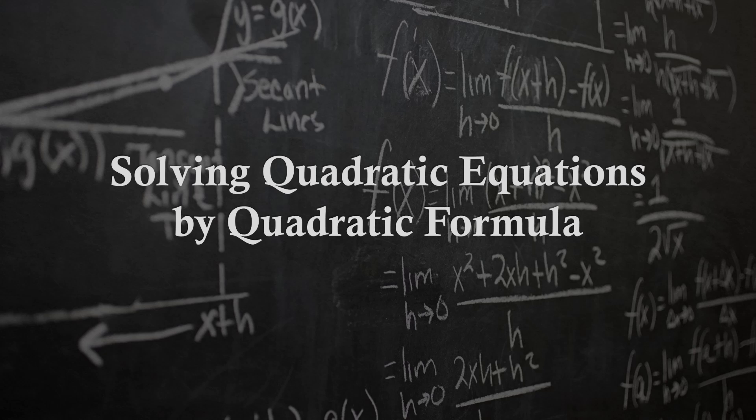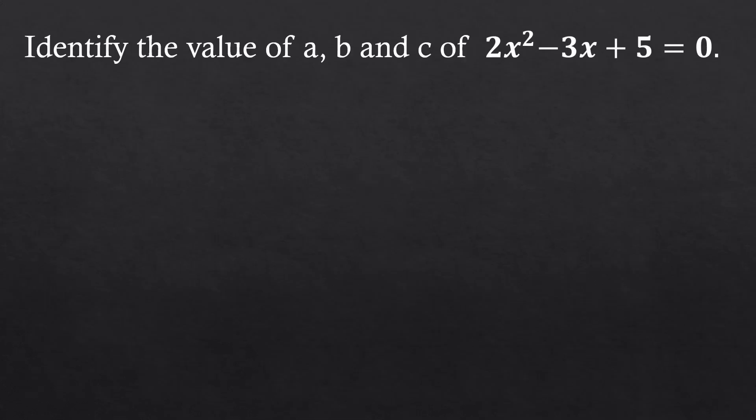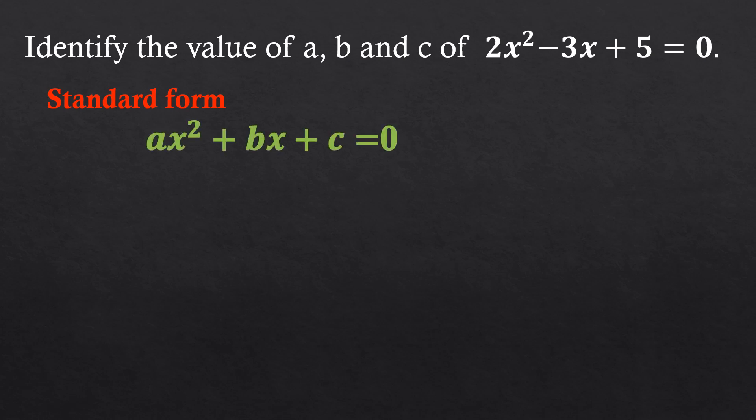Good day everyone. Today I will discuss another method for solving quadratic equations: the quadratic formula. Before we proceed with the topic, let us have a short recall. Given the problem, identify the value of A, B, and C of 2x squared minus 3x plus 5 is equal to 0. In identifying the values of A, B, and C, make sure the equation is in standard form: ax squared plus bx plus C is equal to 0.